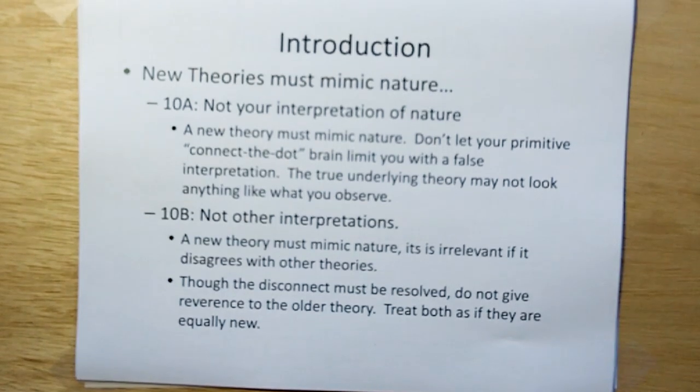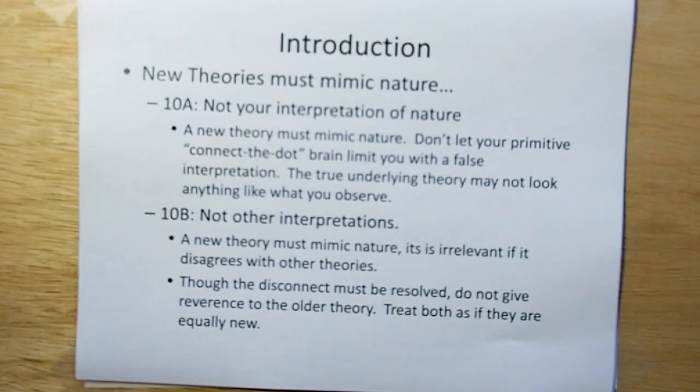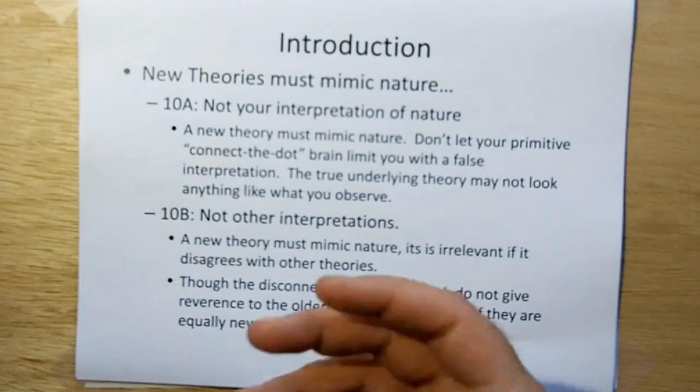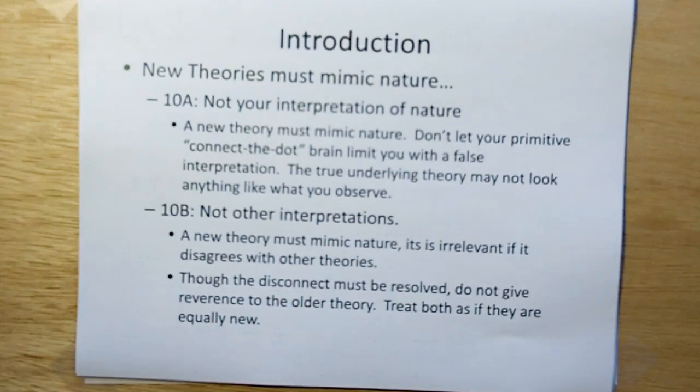So new theories must mimic nature, not your interpretation of nature. Don't let your primitive connected dot brain limit you with false interpretation. The underlying theory may not look anything like what you think you are observing. And theories must not mimic other interpretations or other theories. So it's irrelevant if a theory disagrees with other theories.